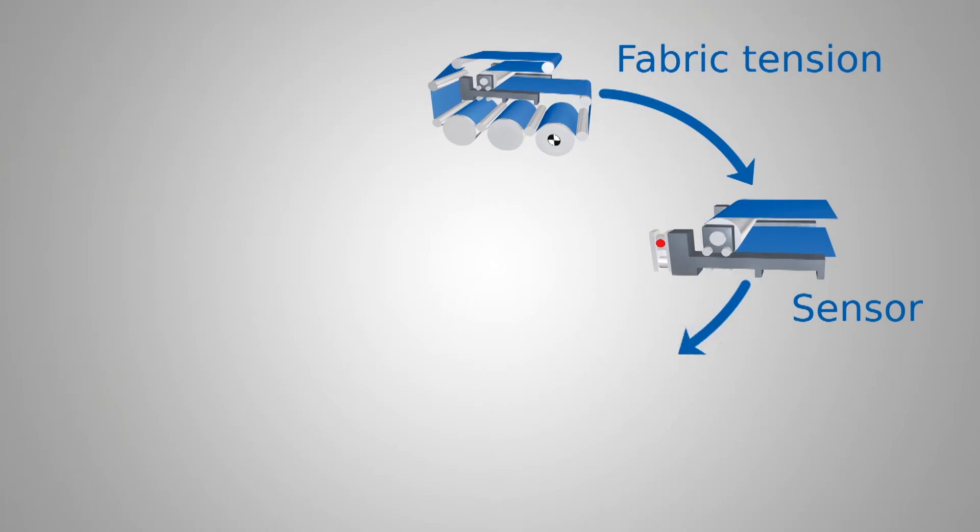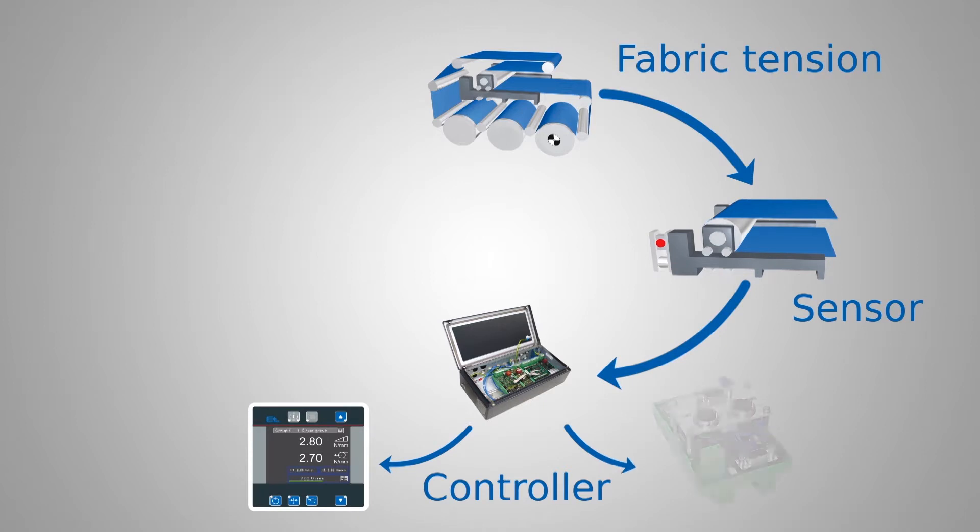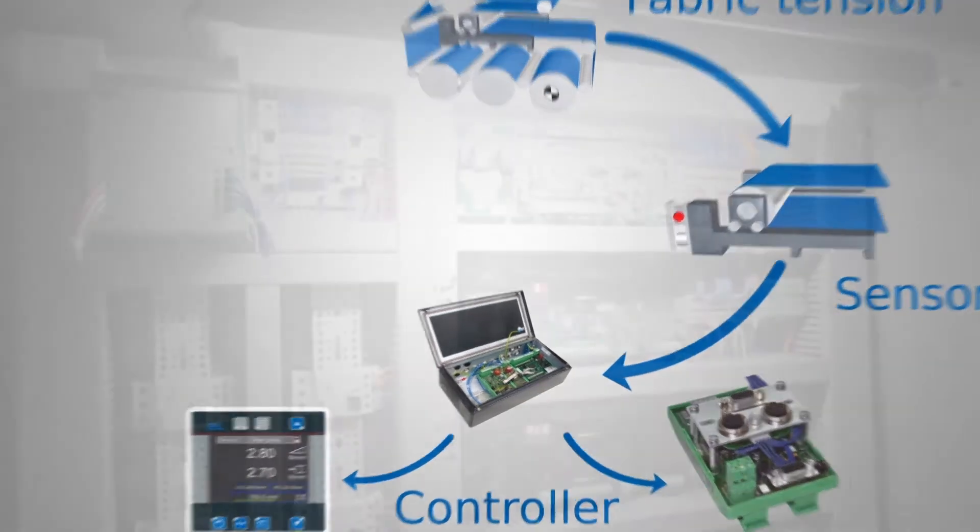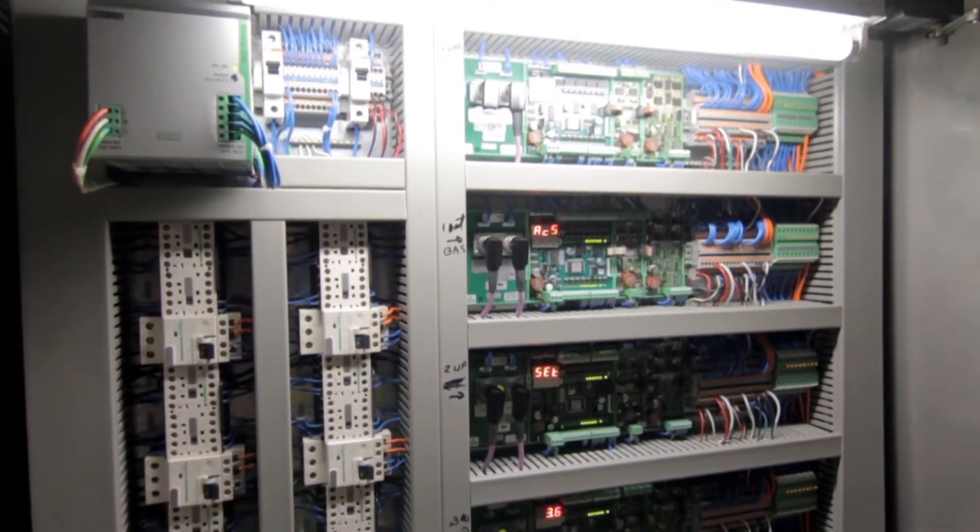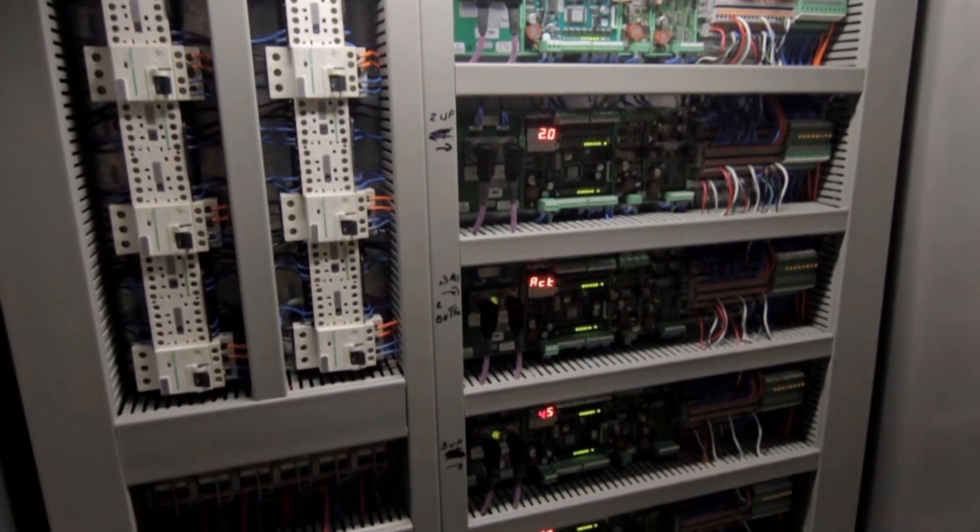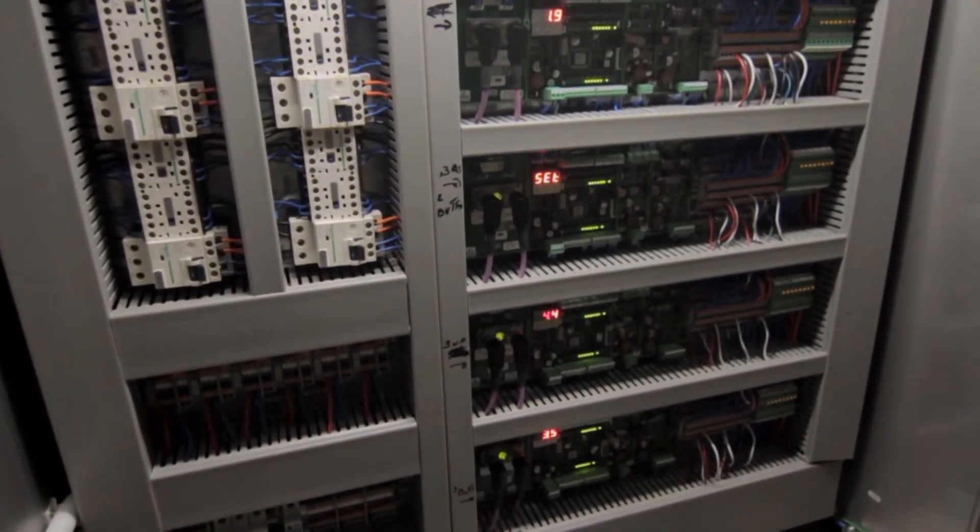The control electronics compare the tension value recorded by the load cell with the prescribed target value and then generate the correction signal. Erhard & Leimer once again supplies a control unit, plus the command stations and interfaces.